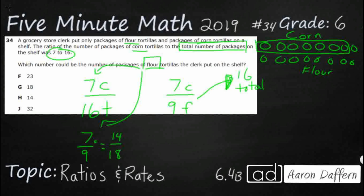I've got my corn and my flour. So 18 could work. I see that as an option right there. 14 is a number there, but 14 is for the 7, not for the 9 flour.